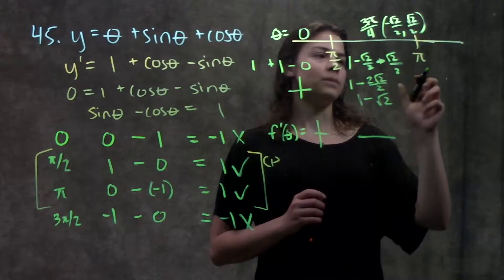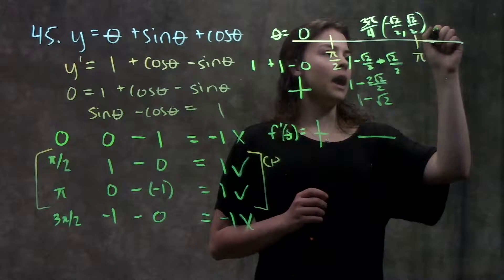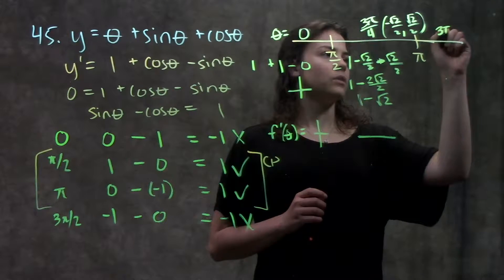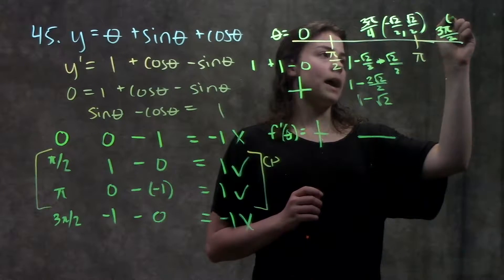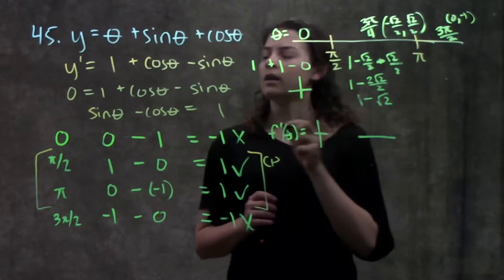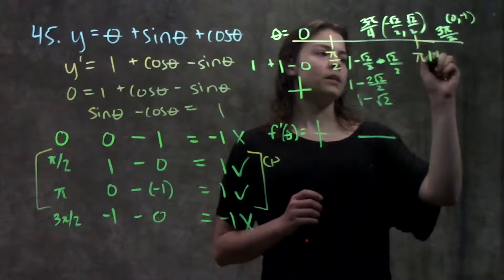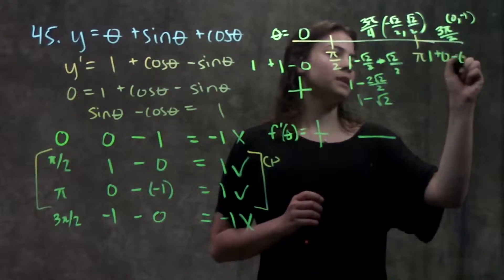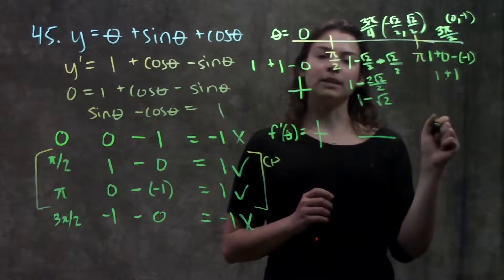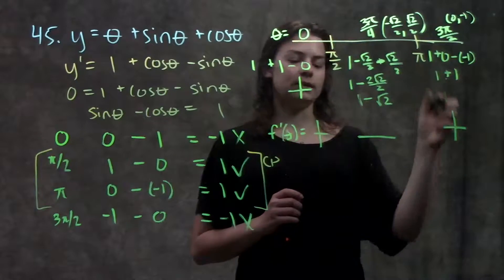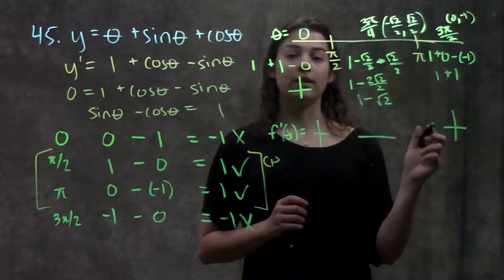And in this last interval, let's try the value three pi over two. Remember at three pi over two, I have the coordinates zero, negative one. So when I plug that in, I have one plus zero minus negative one. That'll be one plus one. This will be a positive value again. So in this interval, my derivative is positive.